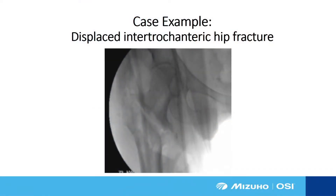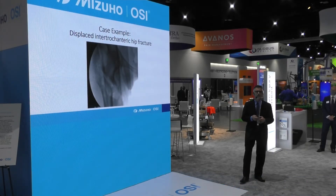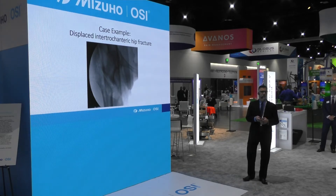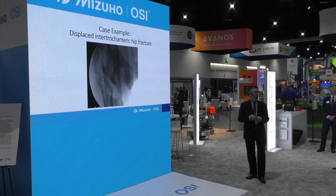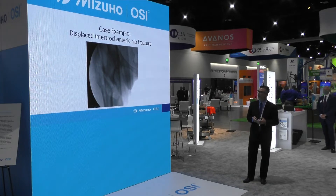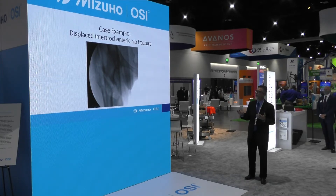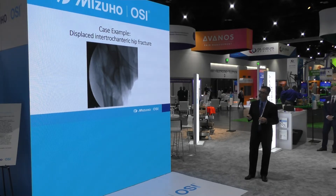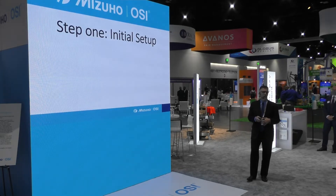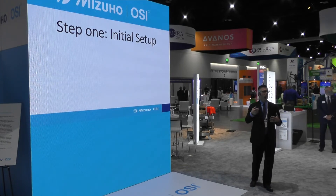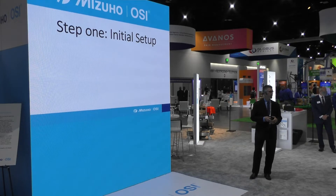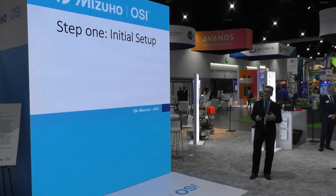What we did is put together a case example — we did a cadaveric lab creating an iatrogenic fracture to try to demonstrate the utility of the HANA table and how it really functions as a surgical assist. That's really how I look at the table and what it has as far as capabilities and what it can deliver in the operating room. This is your standard intertrochanteric, basicervical proximal femur hip fracture, and we go through steps as the patient is prepped and comes into the surgical theater.